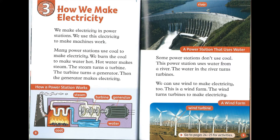Some power stations don't use coal. This power station uses water from a river — the water turns turbines. We can use wind to make electricity, too. This is a wind farm, where the wind turns turbines to make electricity.